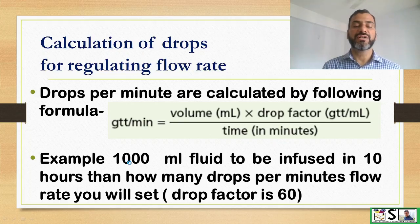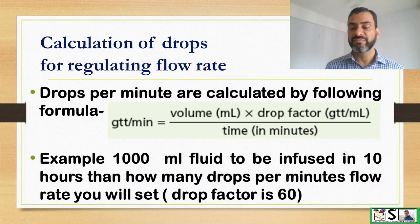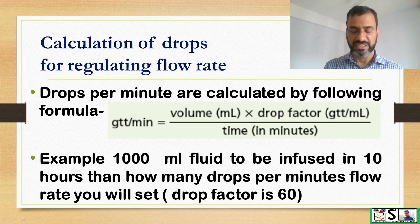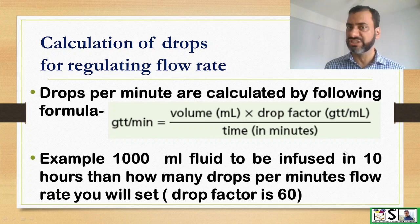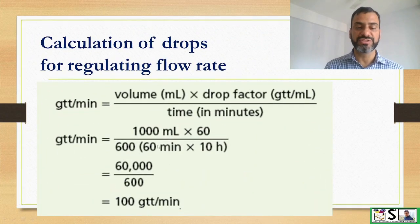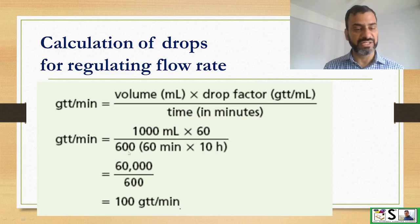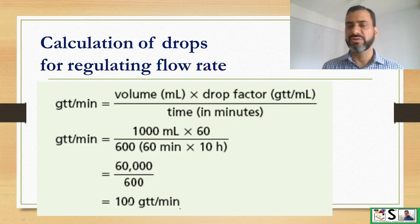For example, if we are infusing 1000 ml of fluid in 10 hours, how many drops should go per minute? The drop factor here is 60, which is normal for a standard drip set. So we calculate: 1000 ml multiplied by the drop factor of 60, divided by 10 hours multiplied by 60 minutes, giving 600 minutes. The answer is 100 drops per minute, and we set the drip accordingly.